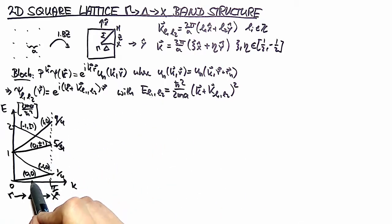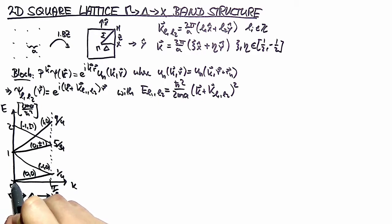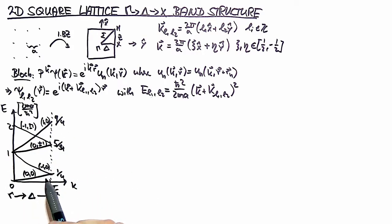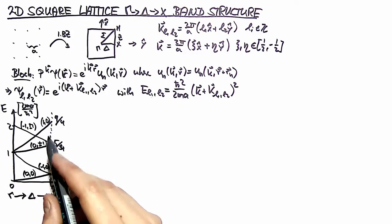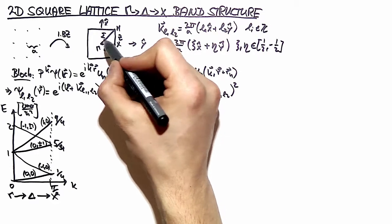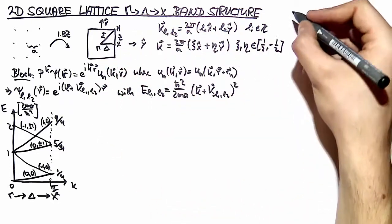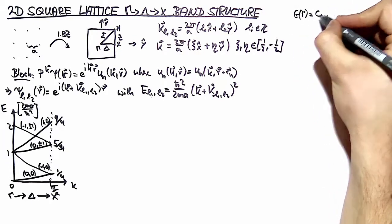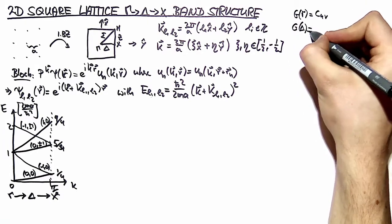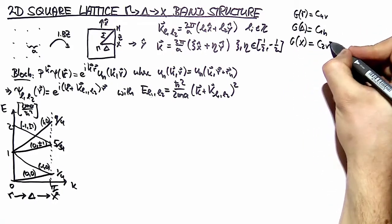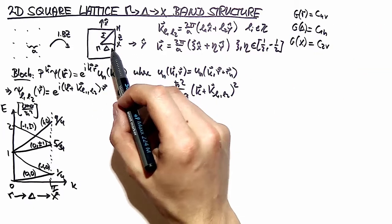To know what happens when we apply a potential, we have to assign irreducible representations to our specific bands. For this we need to assign point groups corresponding to the little groups of our specific points. The point group corresponding to the gamma point is C₄ᵥ, the point group corresponding to the delta direction is C₁ₕ, and the point group corresponding to our X point is C₂ᵥ.